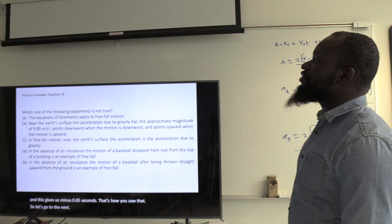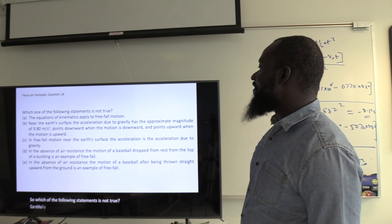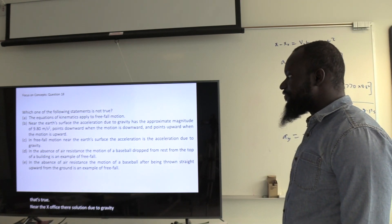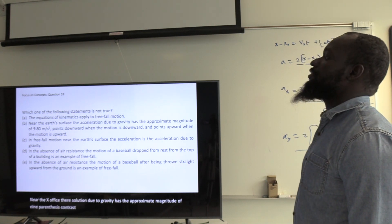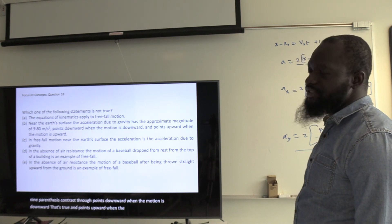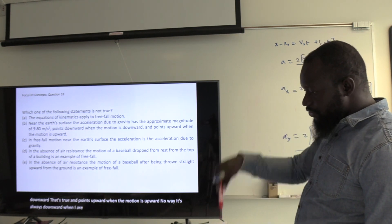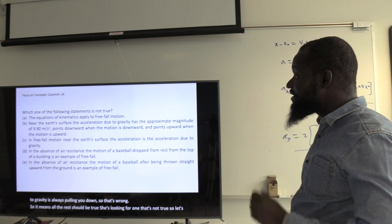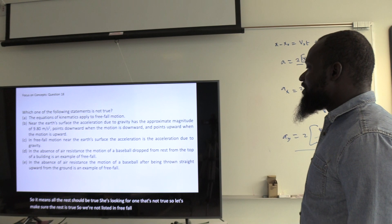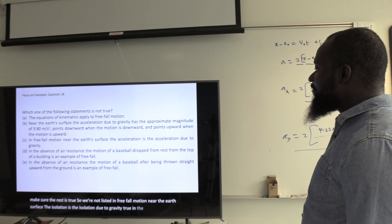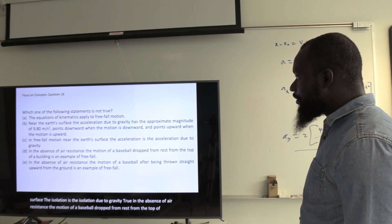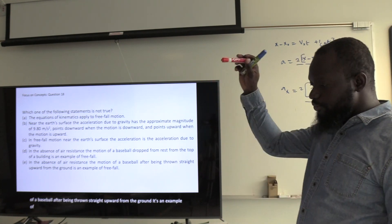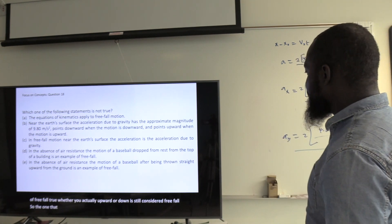Which statement about free-fall is NOT true? The equations of kinematics apply to free-fall — true. Near earth's surface, acceleration due to gravity is approximately 9.8 m/s² — true. It points downward where motion is downward — true. It points upward where motion is upward — NOT true. Acceleration due to gravity is always downward regardless of direction of motion. So the correct answer is that statement — it's always downward.